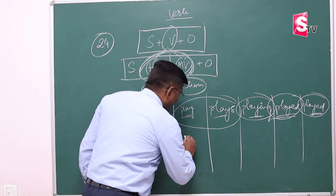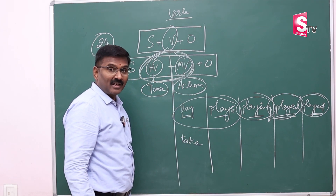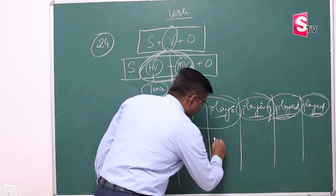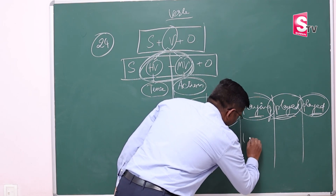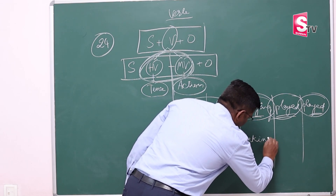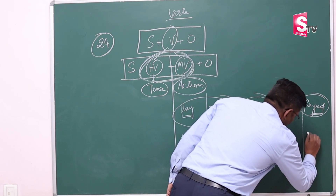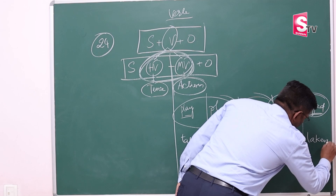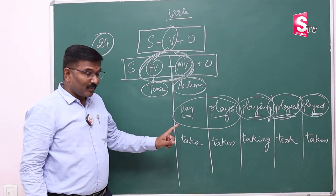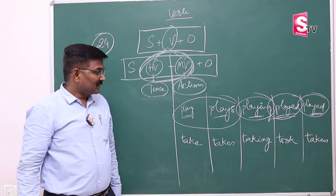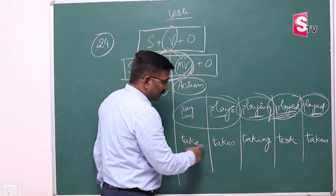Let me take one more example. 'Take' is a verb. What are the five forms of 'take'? They are: take, takes, taking, took, and taken. Like this, it has five forms.